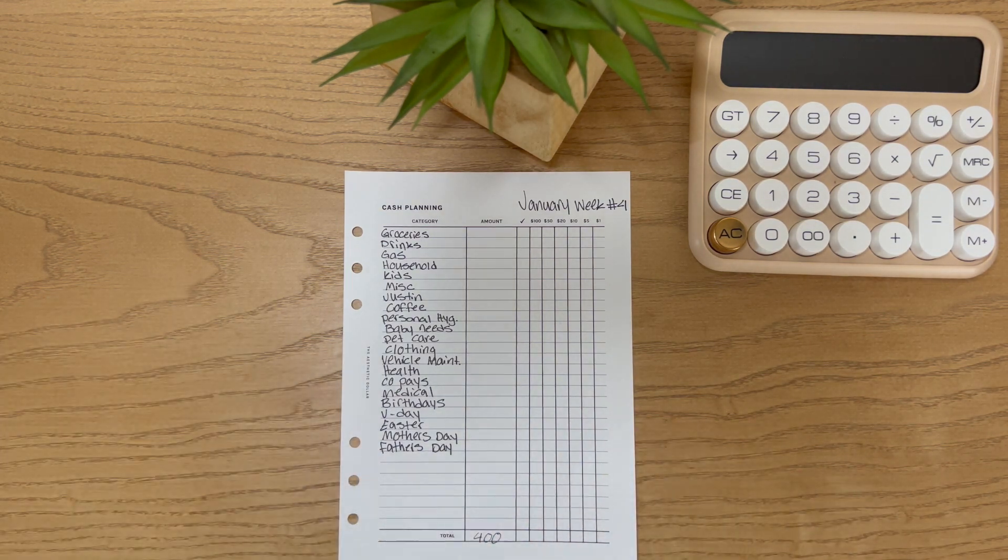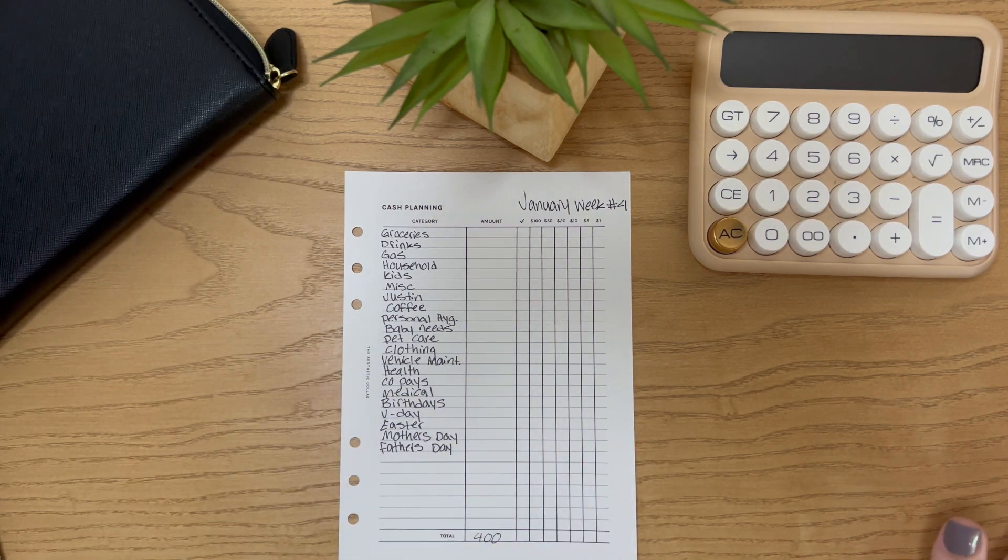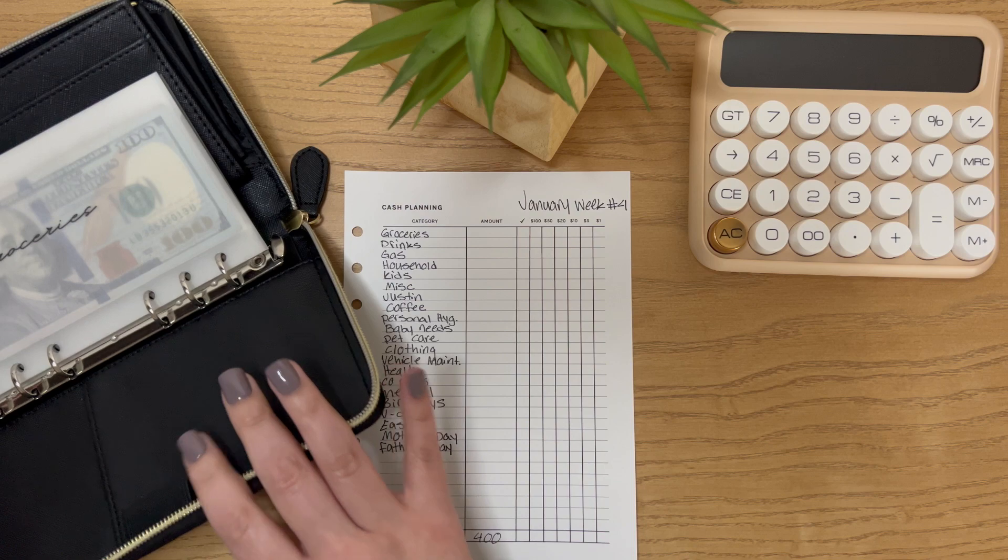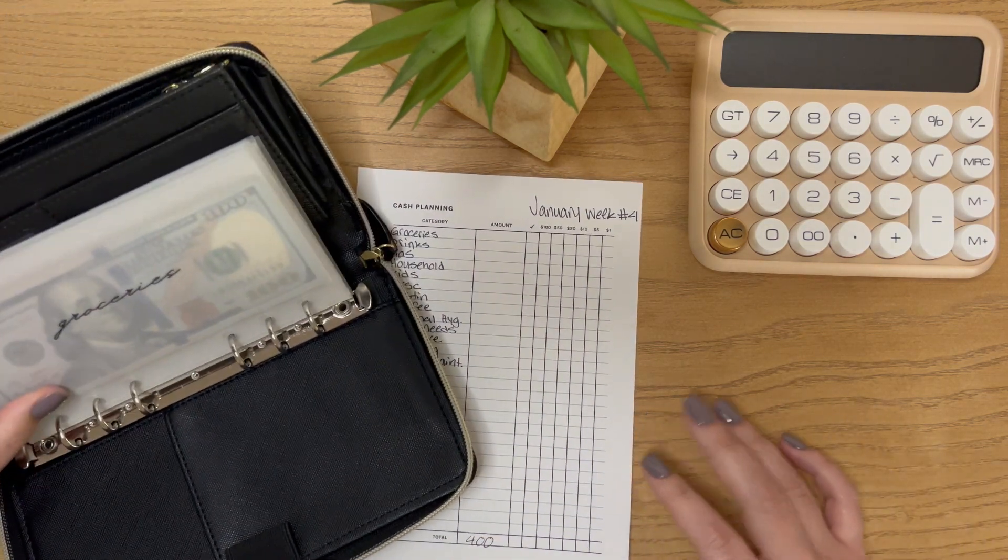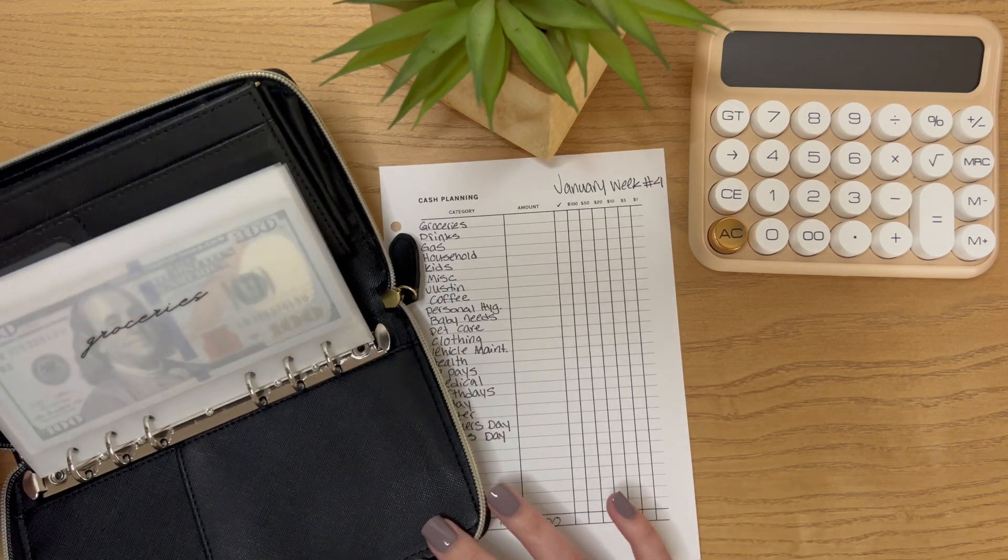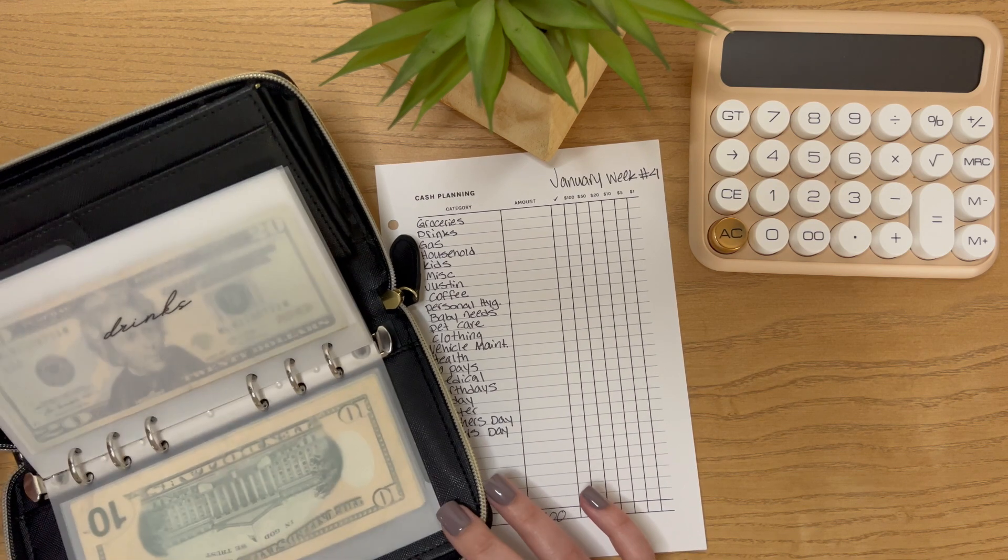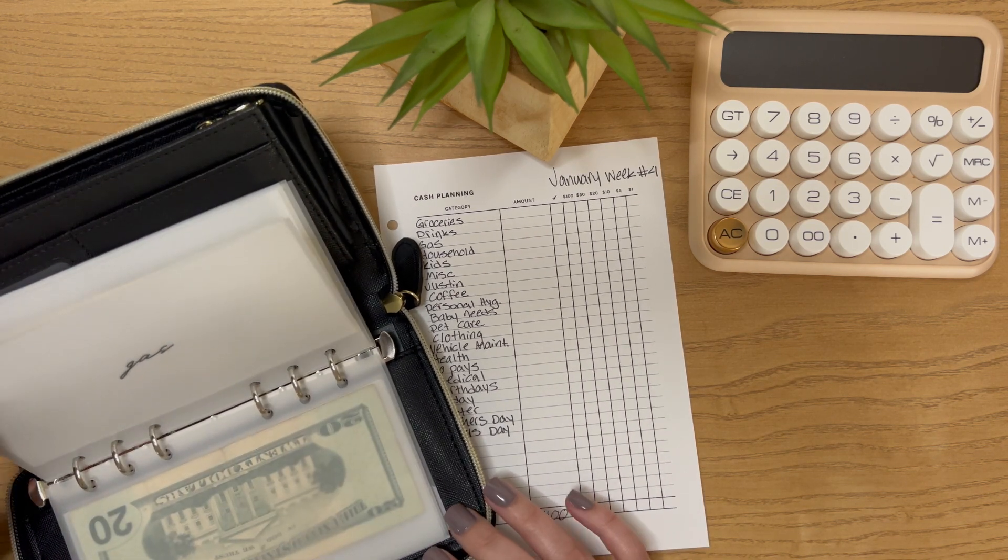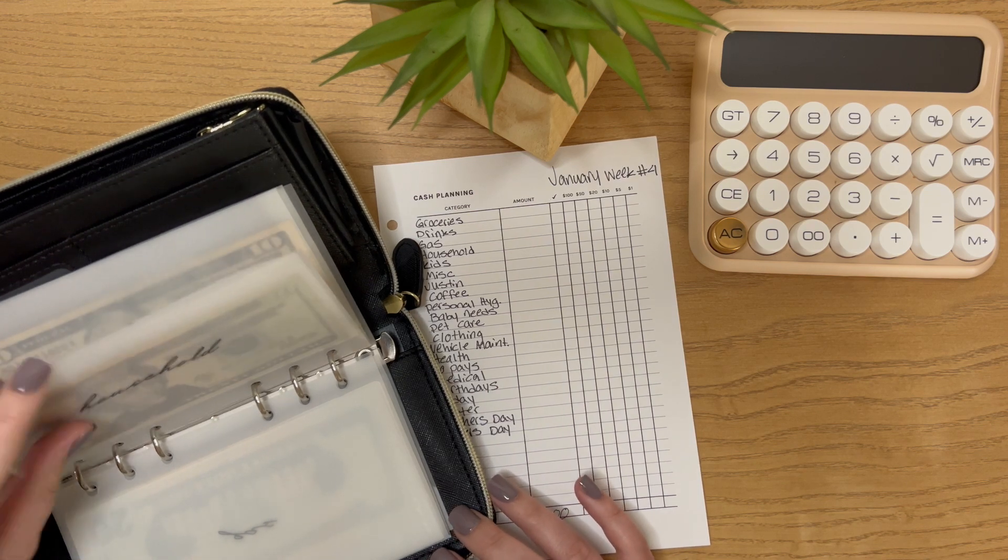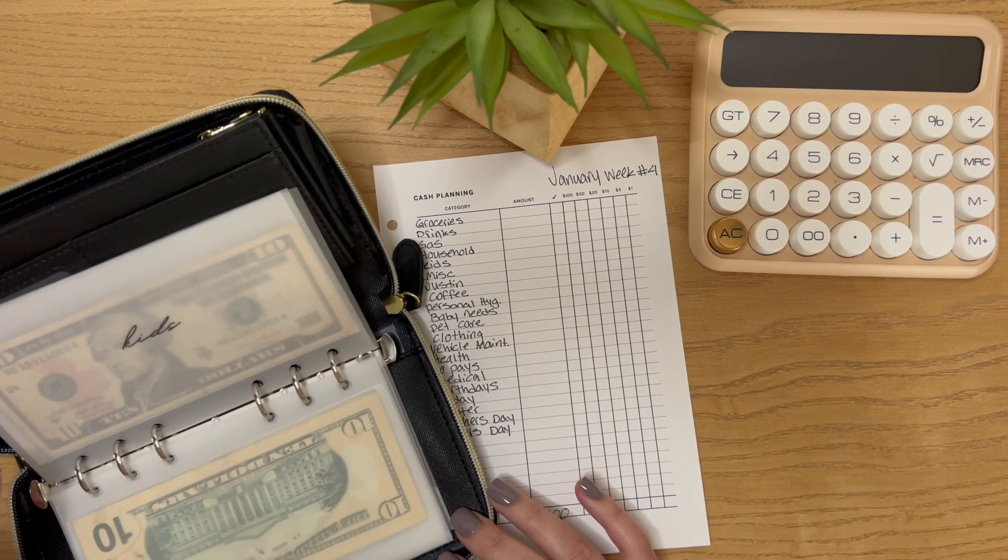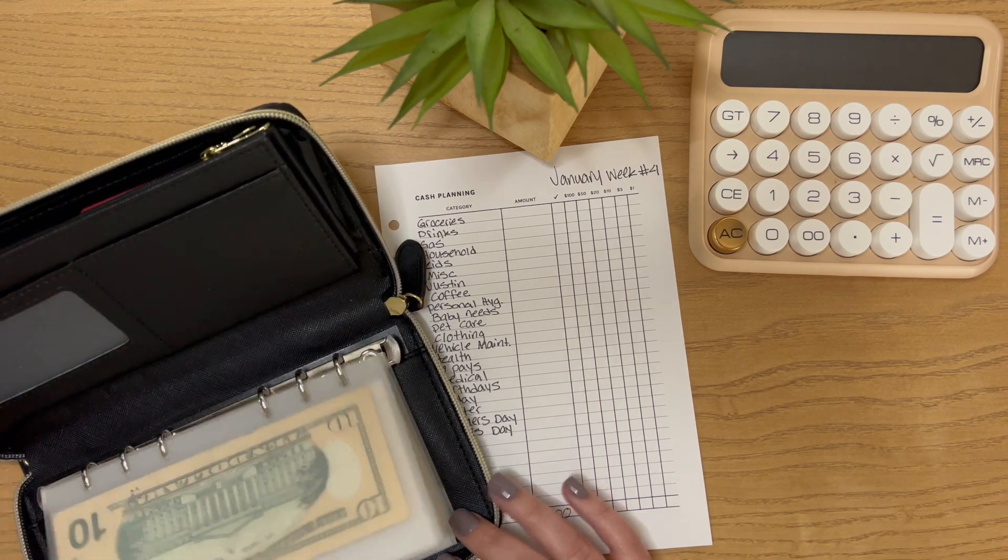What I do during this process is I kind of go and look through each of my envelopes to see where I'm at for the week. I'm filming on a Tuesday and I usually go grocery shopping on Wednesdays. So right now my grocery envelope is still full because I'll be shopping tomorrow, but that will be gone. I have no gas money in my wallet left. I spent $10 out of household, so I need to replenish that one. And then kids and miscellaneous are still good to go in my wallet.